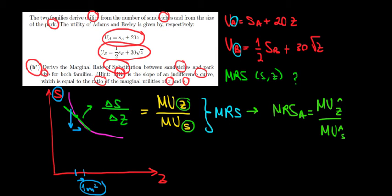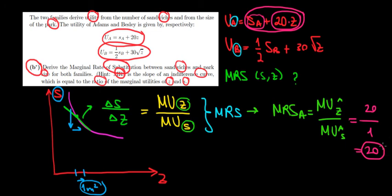Let's see what that's going to be. The marginal utilities are the derivatives, so we're working with partial derivatives. The partial derivative of this function with respect to Z - we're differentiating 20Z with respect to Z, which gives us only the constant of 20 - divided by the marginal utility with respect to S. The S derivative is just going to be one. So the result is equal to 20. That is the MRS for family A.